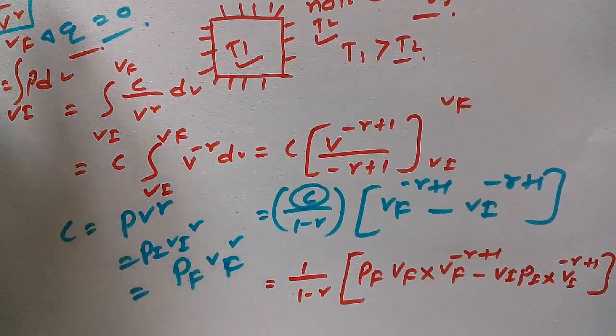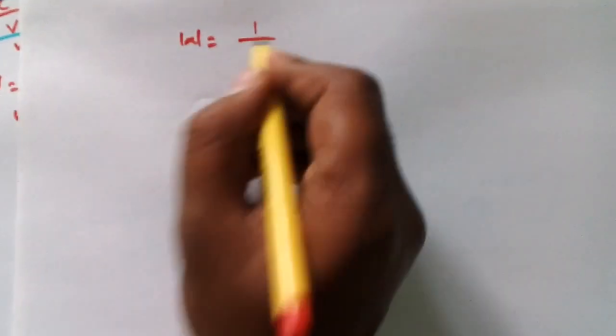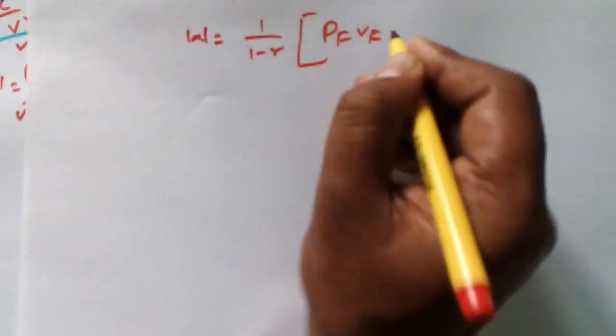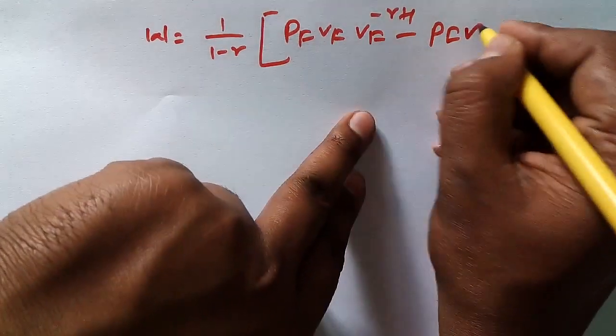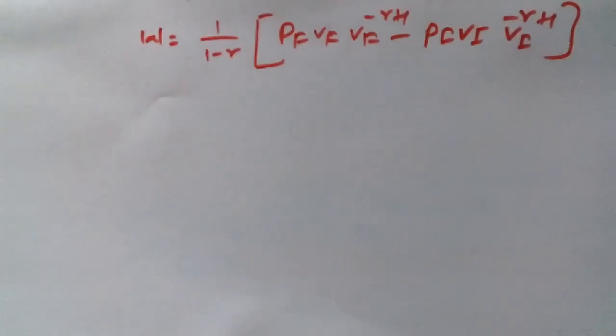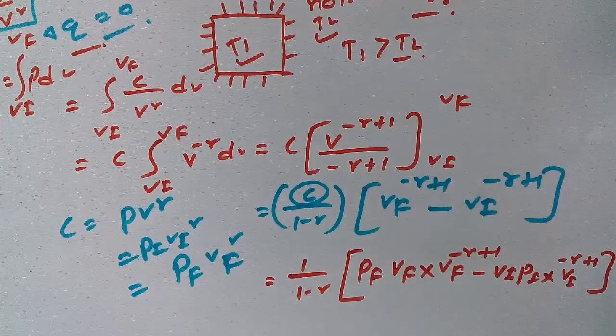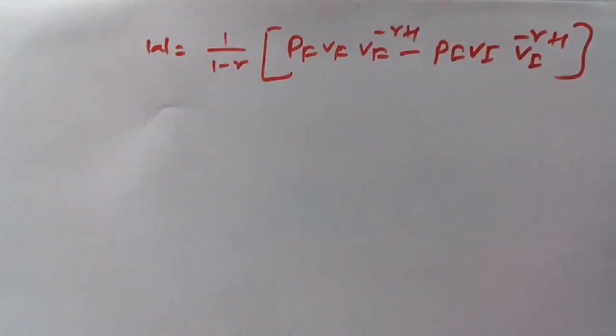Now let me make you understand in a much better way. I have another piece to show you. Now what we got: W equals 1 over 1 minus gamma, times P_F V_F V_F to the power minus gamma plus 1... So I have to just simplify it. What I've written here, I've already shown you in the previous page. That one and this one are the same.